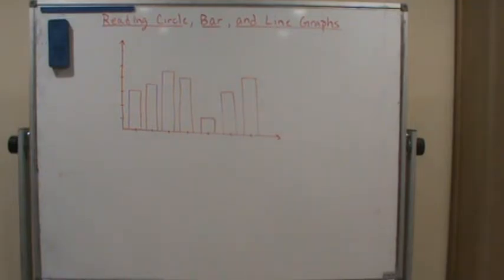The bars don't necessarily need to touch, especially if you're dealing with categorical variables. They could touch if you're dealing with quantitative or continuous data, but at this point we're just going to concentrate on the different pieces of the graph.